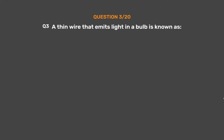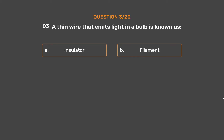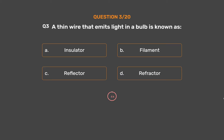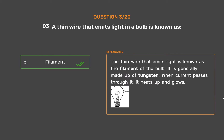Question number 3. A thin wire that emits light in a bulb is known as: Option A: Insulator. Option B: Filament. Option C: Reflector. Option D: Refractor. The correct answer is Option B, Filament. The thin wire that emits light is known as the filament of the bulb. It is generally made up of tungsten. When current passes through it, it heats up and glows.